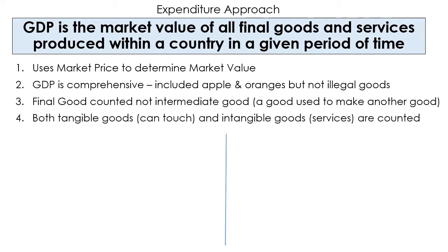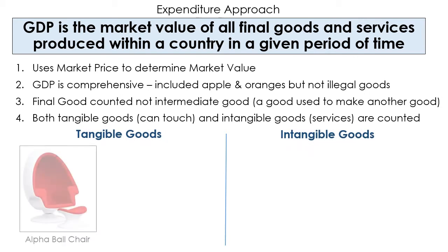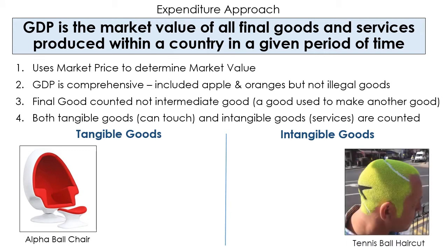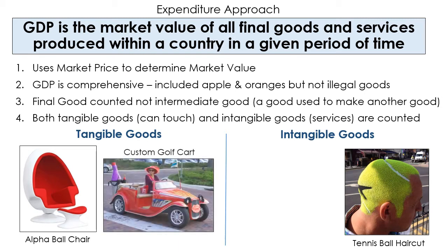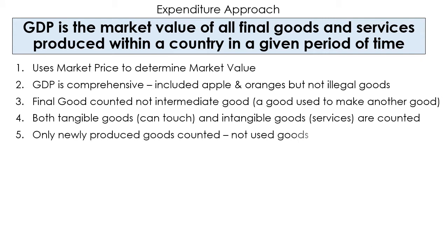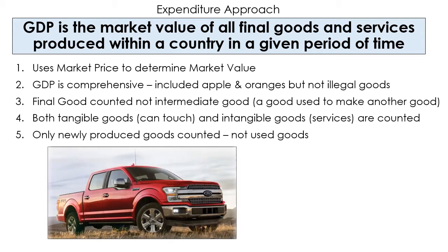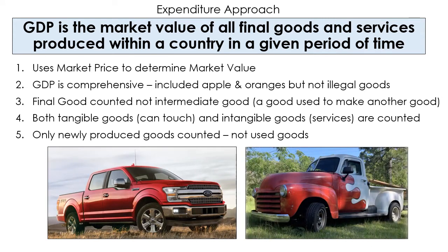We also talk about tangible and intangible goods. Tangible items you can touch and feel; intangible goods are services. A haircut is an intangible good — you can see it, but you can't carry it in your hand. Also, only newly produced goods are counted. If I sell a used car, that won't count. It's when that car was originally produced that it counted. So reselling used goods is not part of GDP — only when it's actually produced.